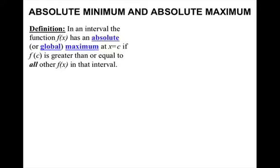We're first going to talk about what an absolute minimum and an absolute maximum are. In an interval, the function f of x has an absolute — or depending on certain books, this could be called a global maximum — at x equals c, if f of c is greater than or equal to all other f of x in that interval.